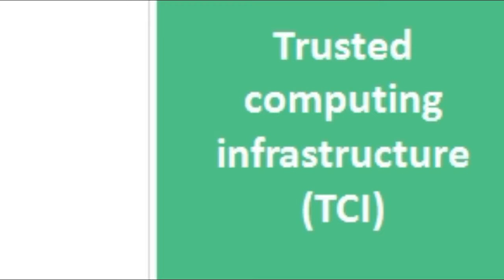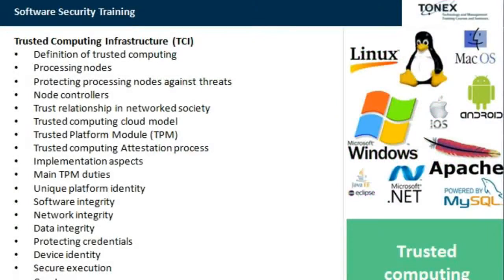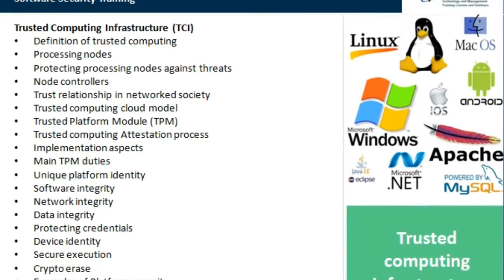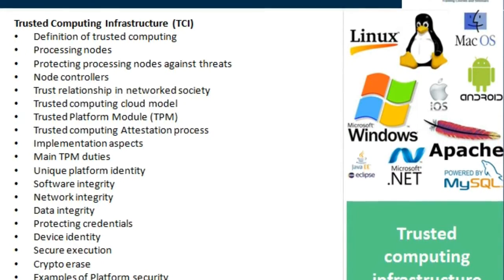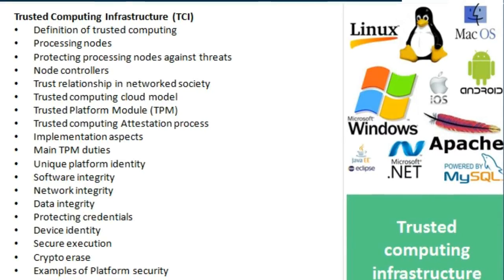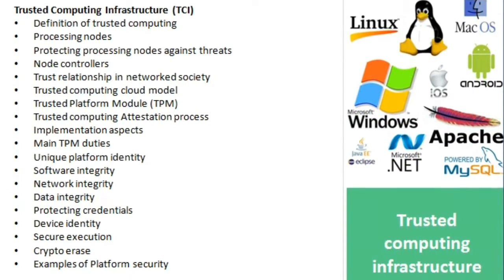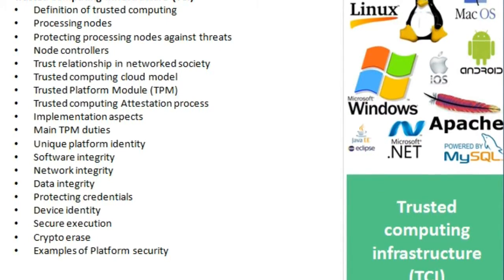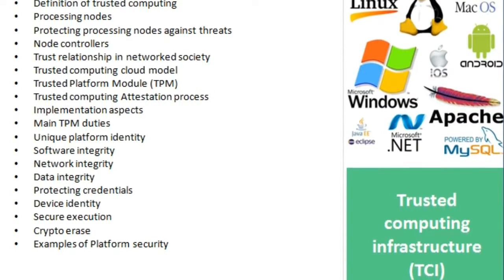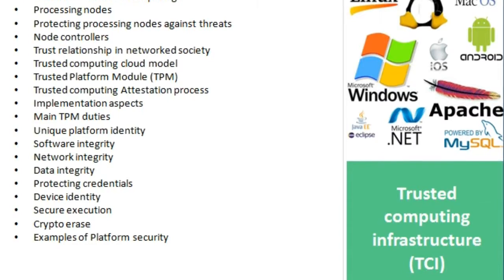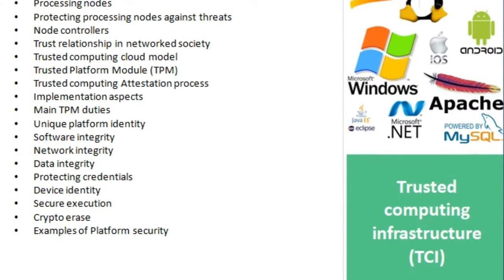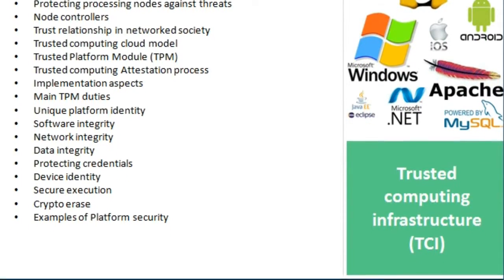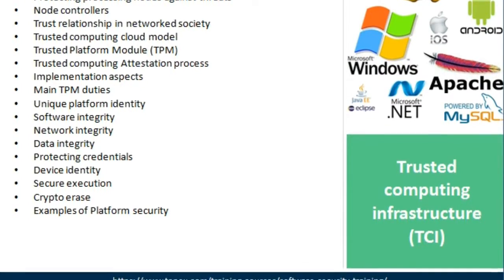The trusted computing infrastructure (TCI) module covers the definition of trusted computing, processing nodes, protecting processing nodes against threats, node controllers, trust relationships in networked society, the trusted computing cloud model, the Trusted Platform Module (TPM), and the trusted computing attestation process implementation.